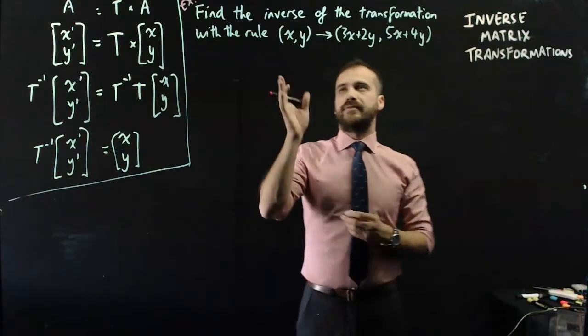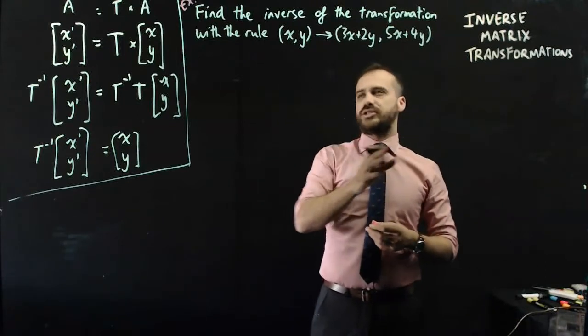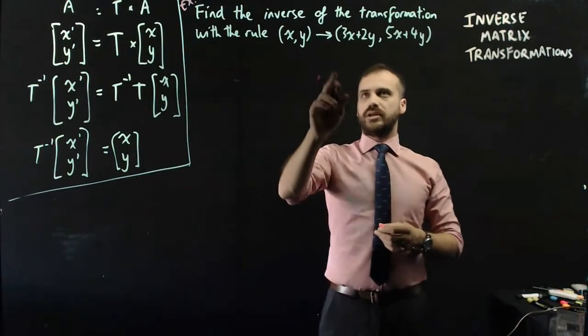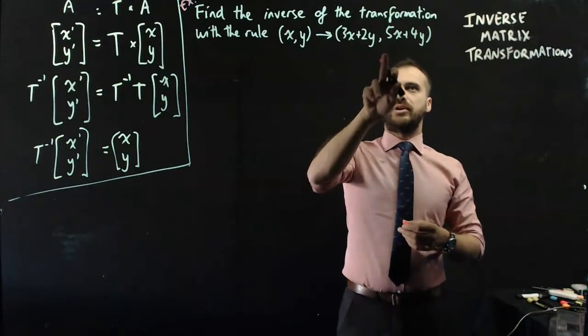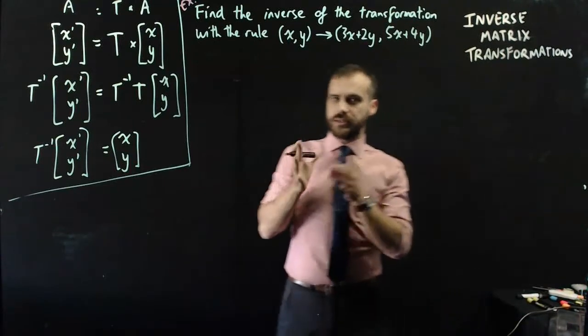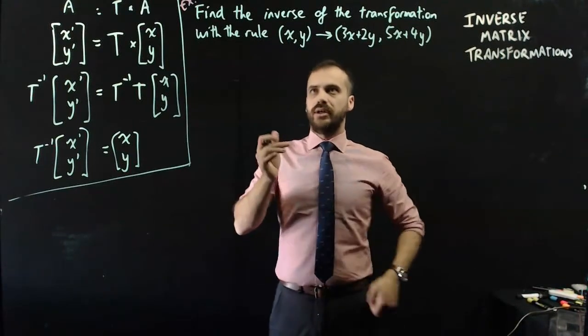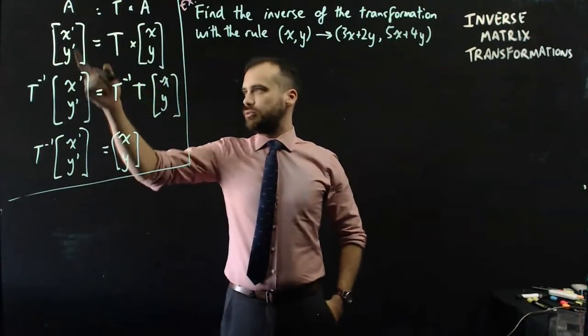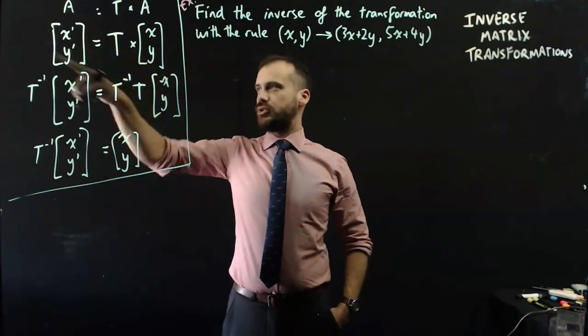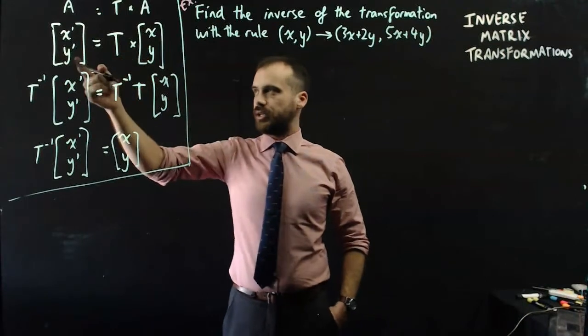All right, so let's try this question here. Find the inverse of the transformation with the rule xy to 3x plus 2y, 5x plus 4y. Okay, how are we going to do that? So let's write what we know into a rule that looks like that. Let's start there.